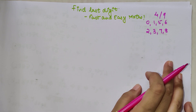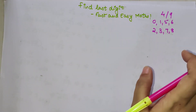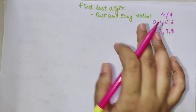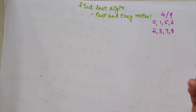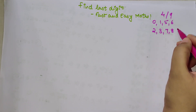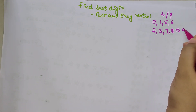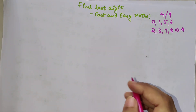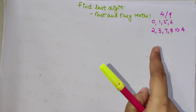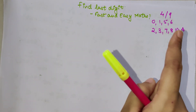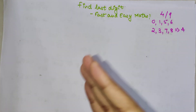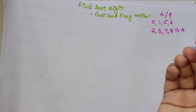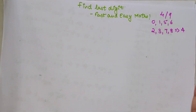Let's first understand the concept of power cycle, which I already explained. We realized that the power cycle was four — meaning after every fourth power, in the case of 2, 3, 7, and 8, the last digits end up repeating themselves. Now let's understand what the power cycle of 4 and 9 is.